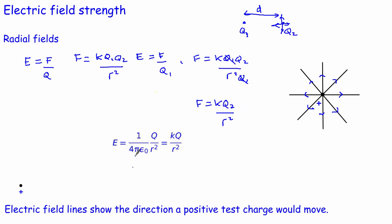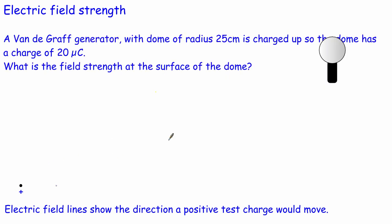So the electric field strength for a radial field is E = KQ/R² — the constant K multiplied by the charge generating the field, divided by the square of the radius. Let's look at a question.